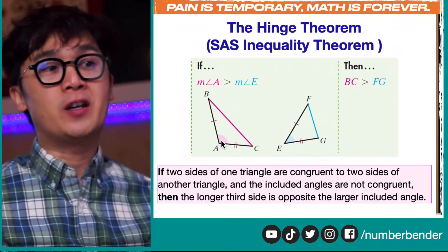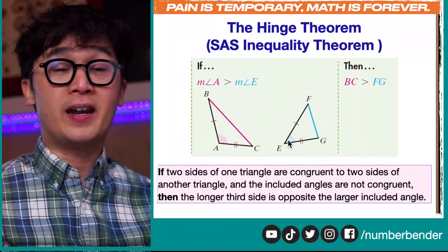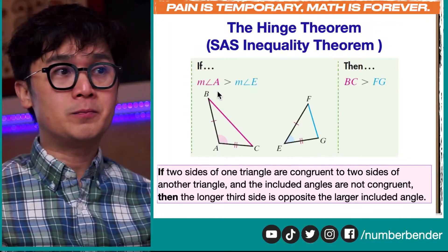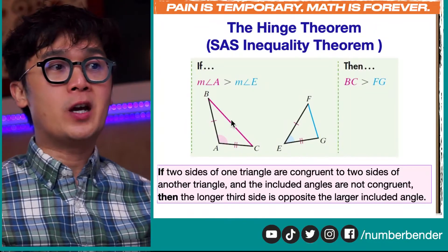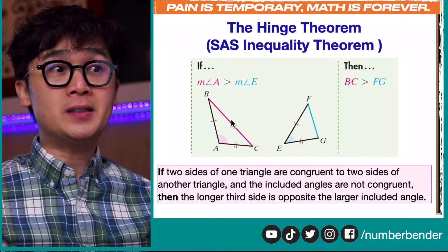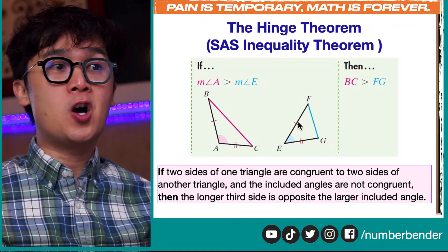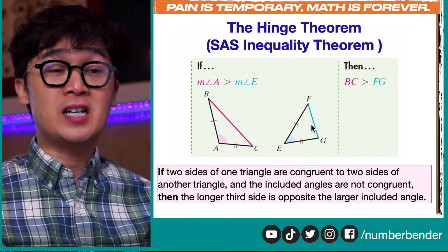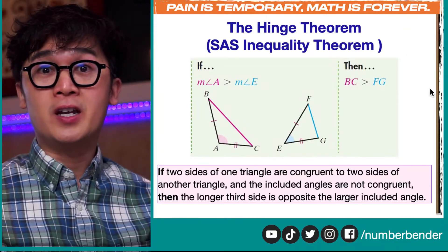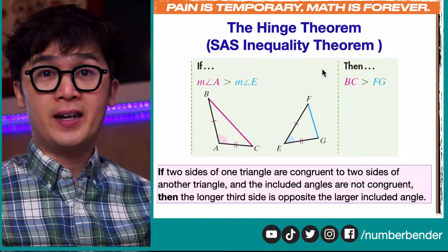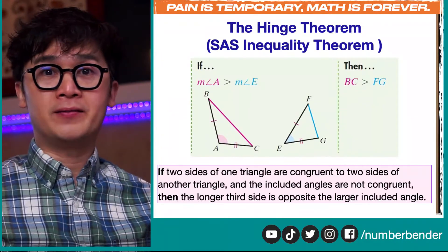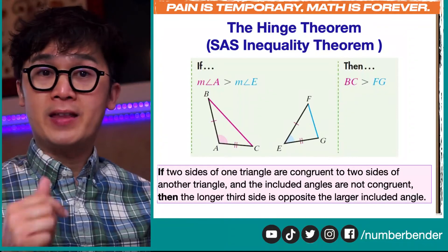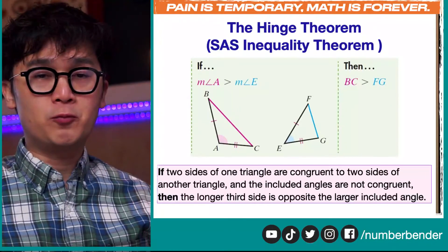Since we know that angle A is greater than angle E in this statement, we know that side BC is longer than side FG using the Hinge Theorem.